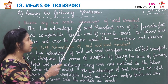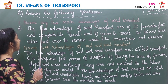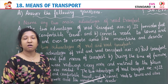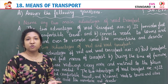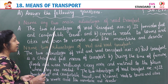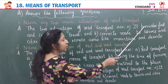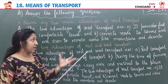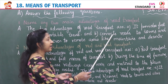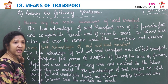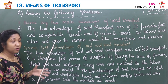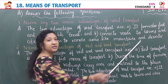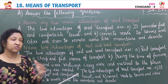Exercise A, question number one: Name any two main advantages of road transport. The two advantages of road transport are: (a) it provides fast and comfortable travel, and (b) it connects roads to towns and cities, and even to remote areas like mountains and deserts, because roads extend up to those remote areas.